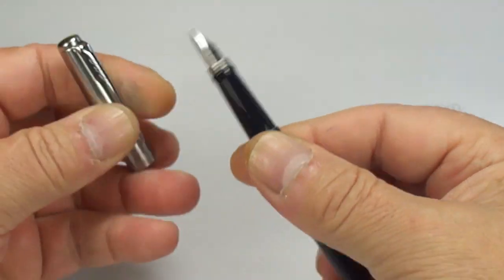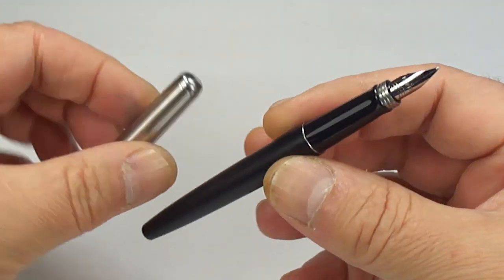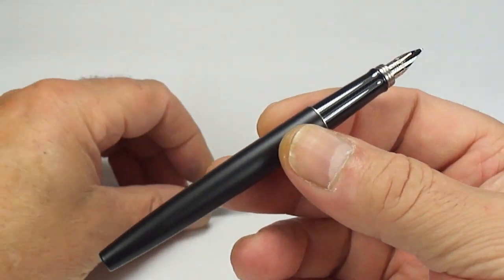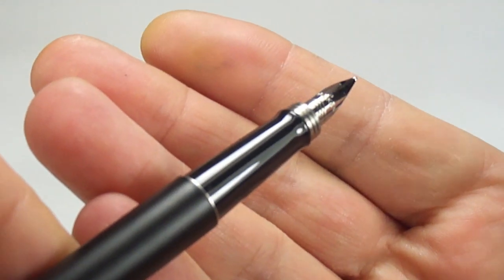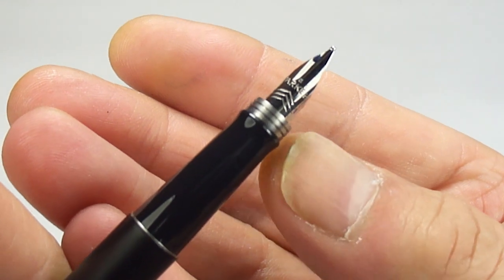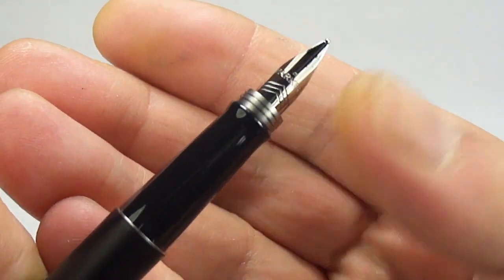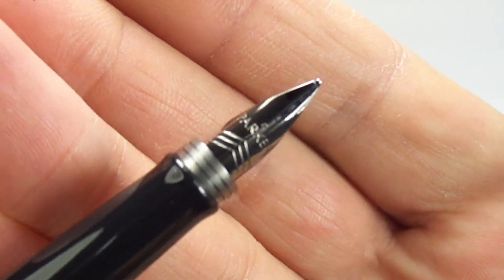Now if we take the cap off which is friction fit, show you the pen in different angles and then let's show you the section to the top. You've got quite a long section and then just above this section we've got this steel ring design and then let's show you the nib to the very top there.